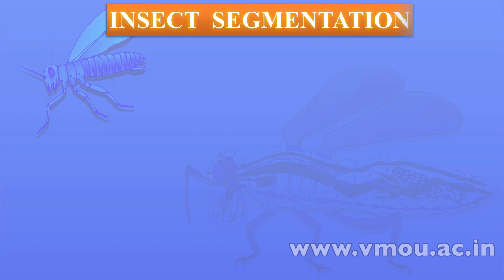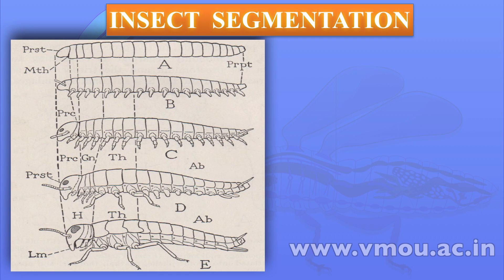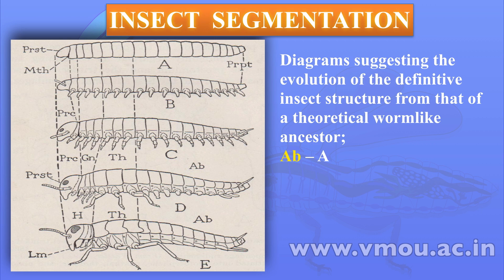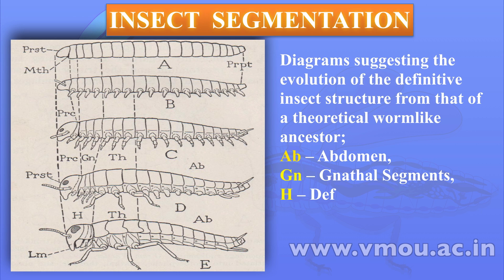Basically, the insect head consists of six segments, as we know it nowadays. However, the insect segmentation needs to be explained here from a primary type of insect structure — that of a theoretical worm-like ancestor. In this diagram, you will find that a prostomium and mouth is there, and the body is elongated with segmentation.